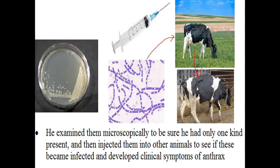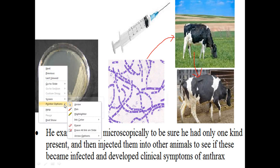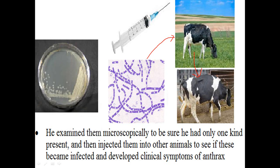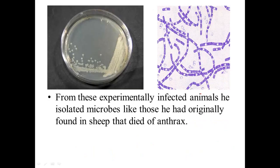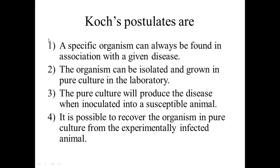From these experimentally infected animals — meaning the animals into which the microorganisms were inoculated — he isolated the same microbes that he had originally found in the cattle that had died due to anthrax. From this research, he formulated Koch's postulates.